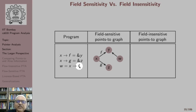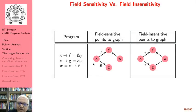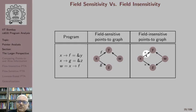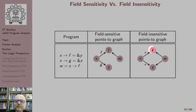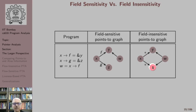In field-insensitive analysis, the field distinction does not matter — we simply use a wildcard star. So any field of X holds the address of Y, and any field of X can also hold the address of Z. Therefore when we say W = X->F, we conservatively say W points to both Y and Z. It is easy to see that field-insensitive analysis is more imprecise than field-sensitive analysis.